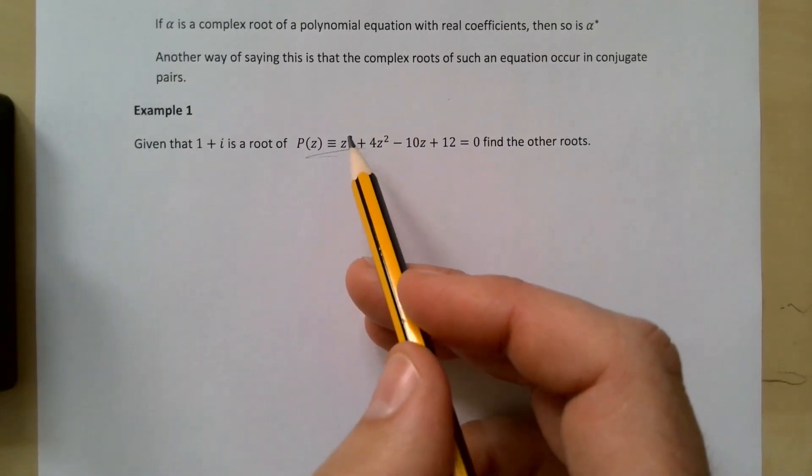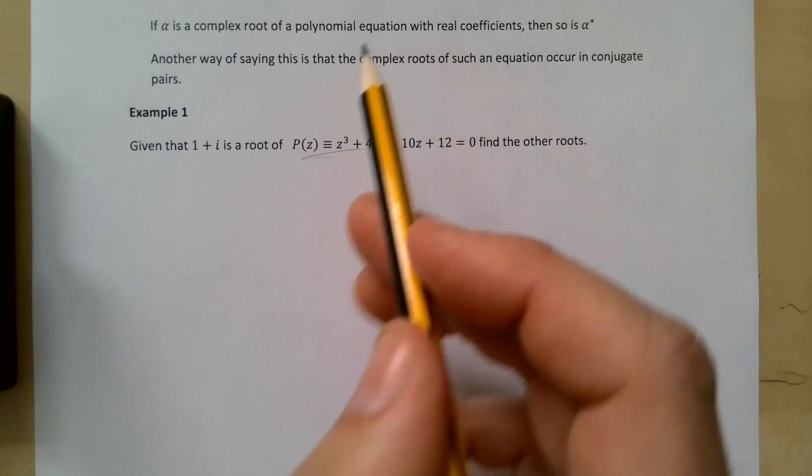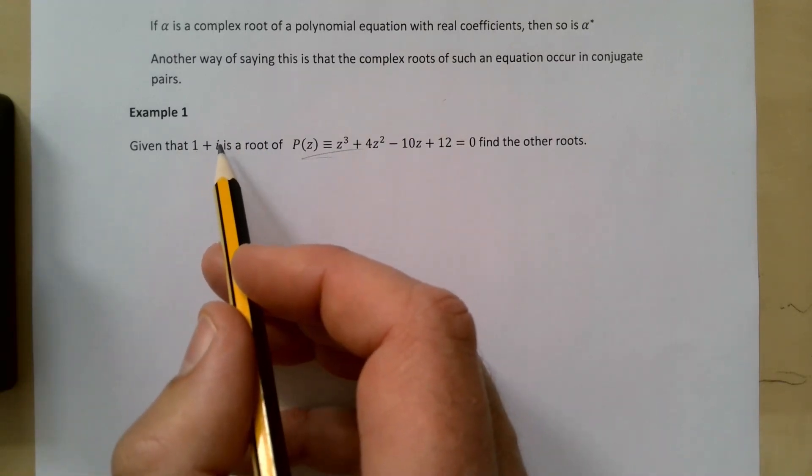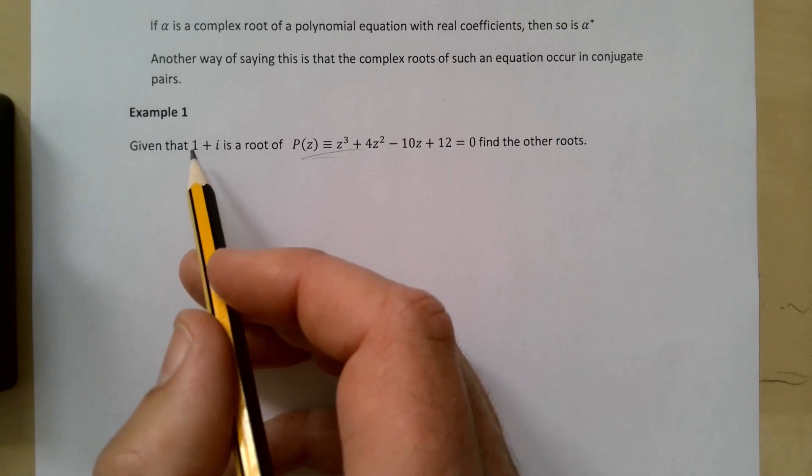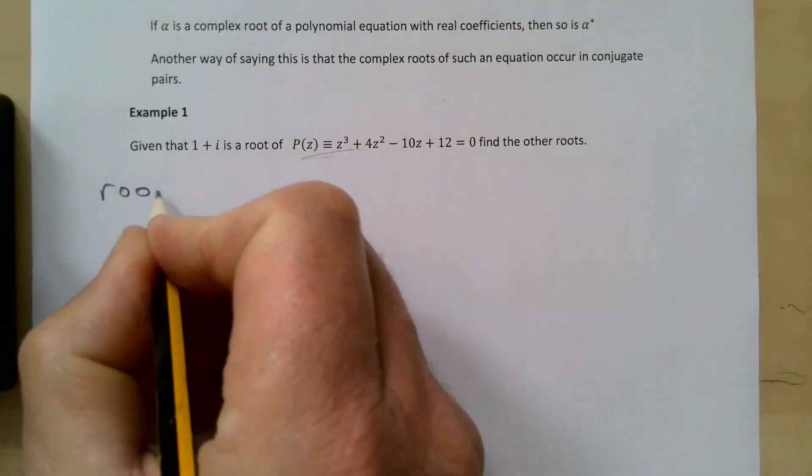It's a cubic equation, we would expect it to have three roots. Here's the information you need. If 1+i is a root, then so is 1-i. So the roots we know so far: we have two of them already, 1+i which we were given, and then also 1-i.